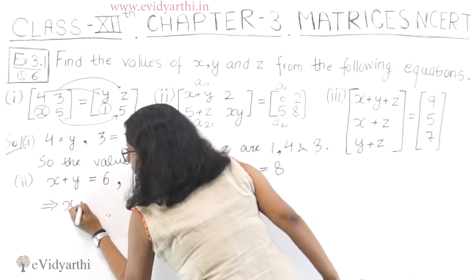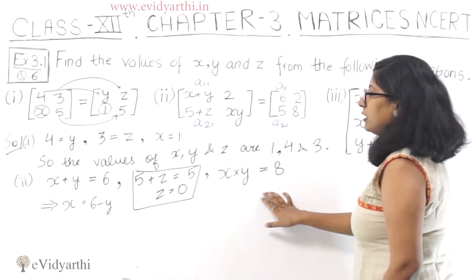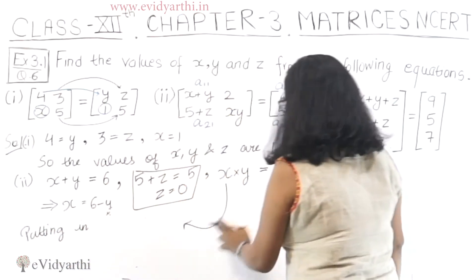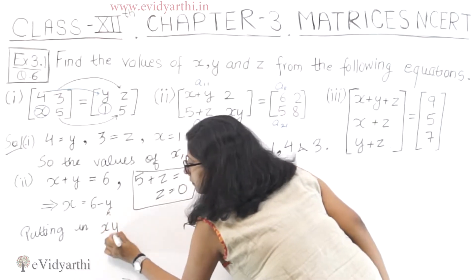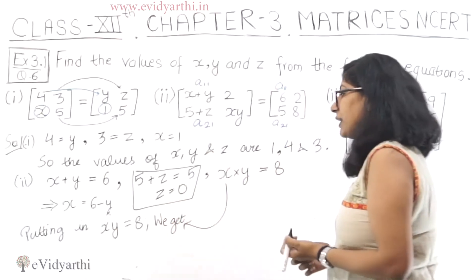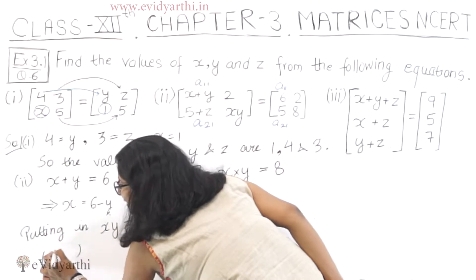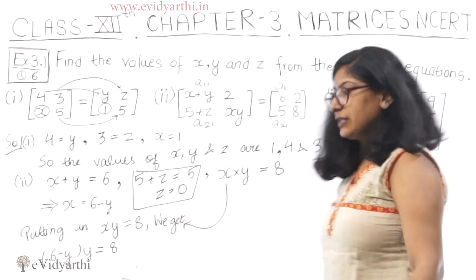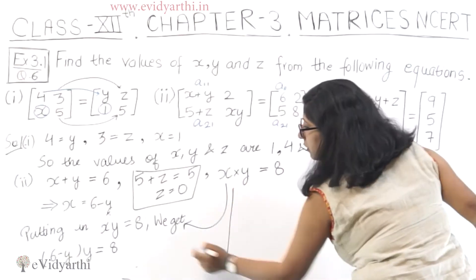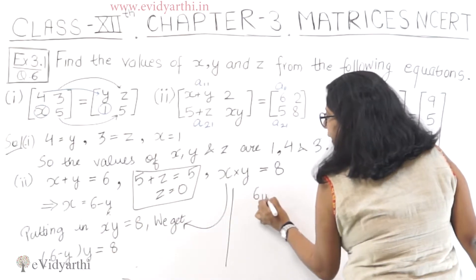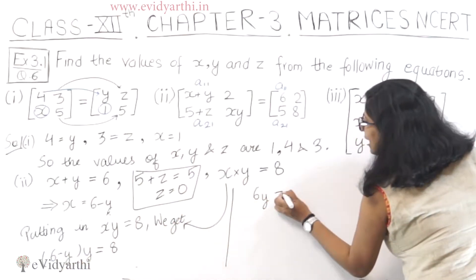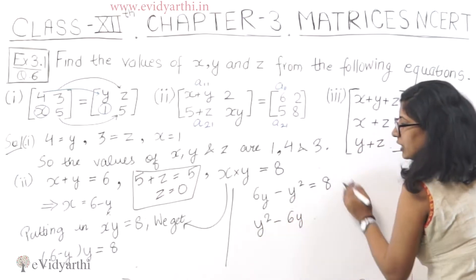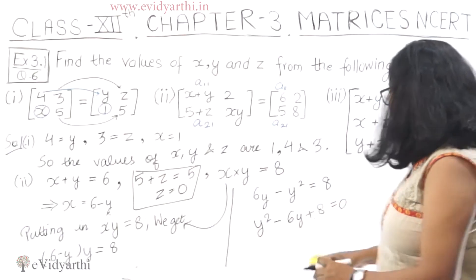Now we have to solve the quadratic equation. We will put x = 6 minus y into xy equal to 8. Substituting: 6 minus y bracket y equals 8, so 6y minus y squared equals 8. Rearranging: y squared minus 6y plus 8 equals 0. So the quadratic is y squared minus 6y plus 8 equals 0.